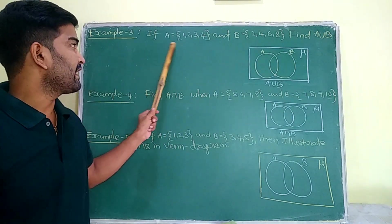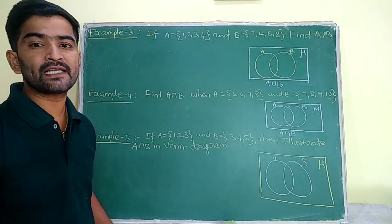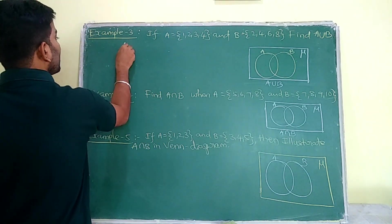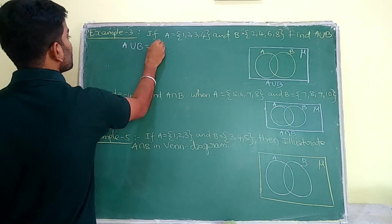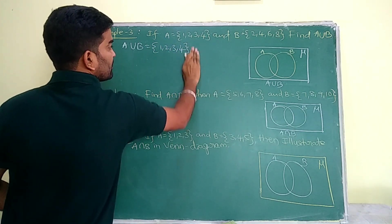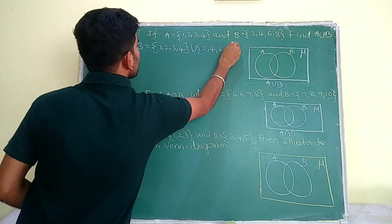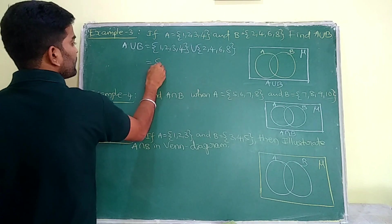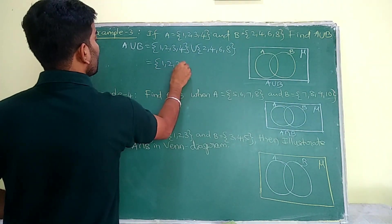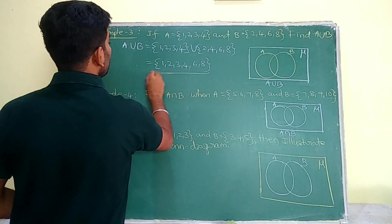Example 3: If A = {1, 2, 3, 4} and B = {2, 4, 6, 8}, find A union B. A union B means write all elements of A and B together in a new set: {1, 2, 3, 4, 6, 8}. That is our A union B.